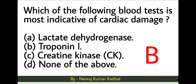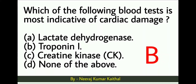Option B — Troponin I — is the right choice. Troponin I is a protein that is released only by the heart and not by skeletal muscles. So it is a more specific marker for cardiac damage in conditions of myocardial infarction.